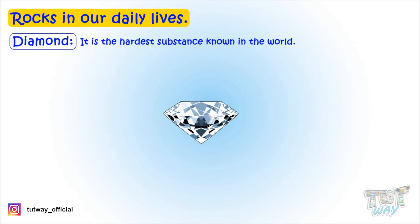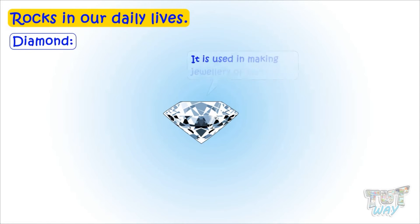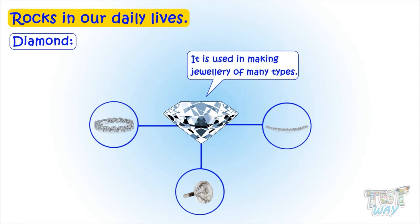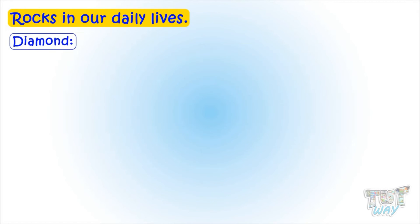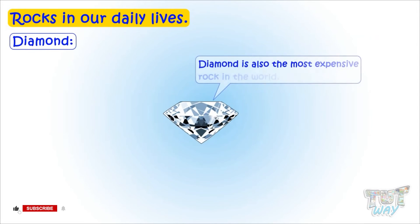Diamond is the hardest substance known in the world — it is the hardest rock existing in nature. It is used in making jewelry of many kinds. Diamond is also used in many machines for cutting very hard things, as it is the hardest substance, and it is also the most expensive rock in the world.